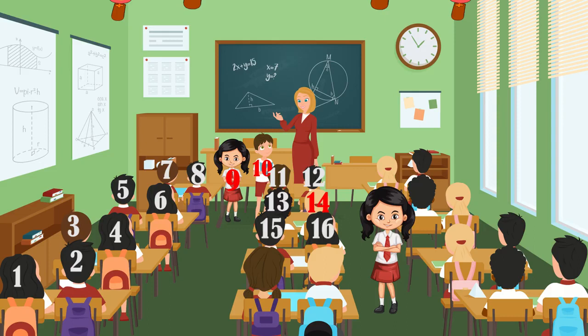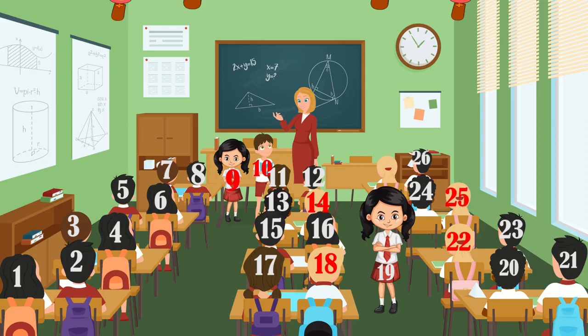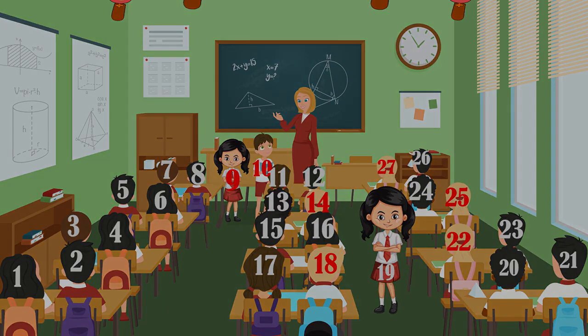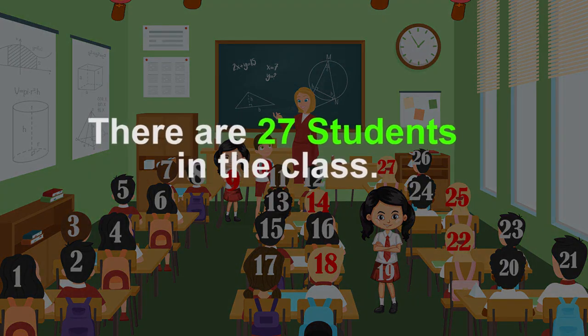15, 16, 17, 18, 19, 20, 21, 22, 23, 24, 25, 26, 27. So, there are 27 students.